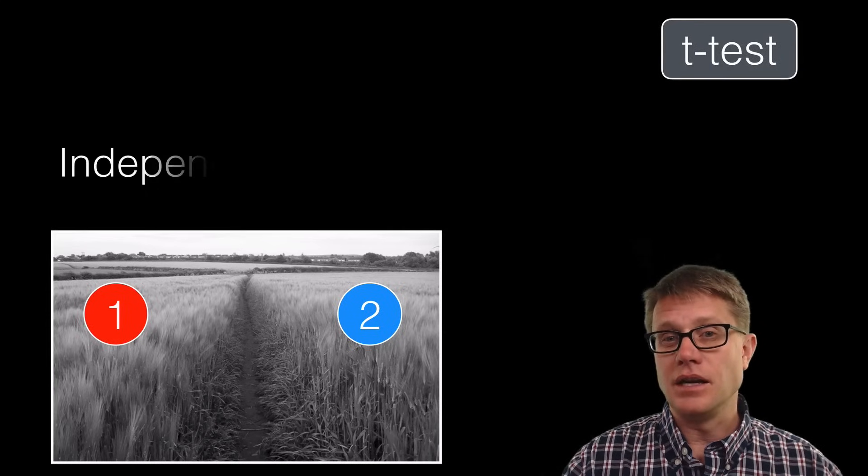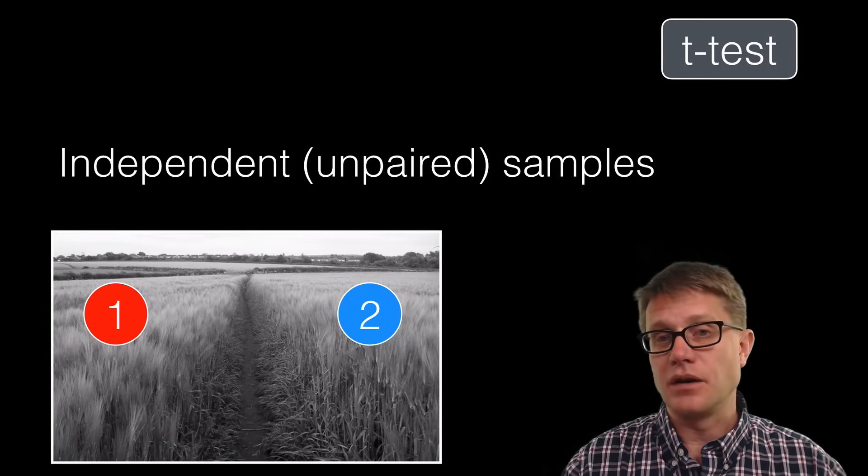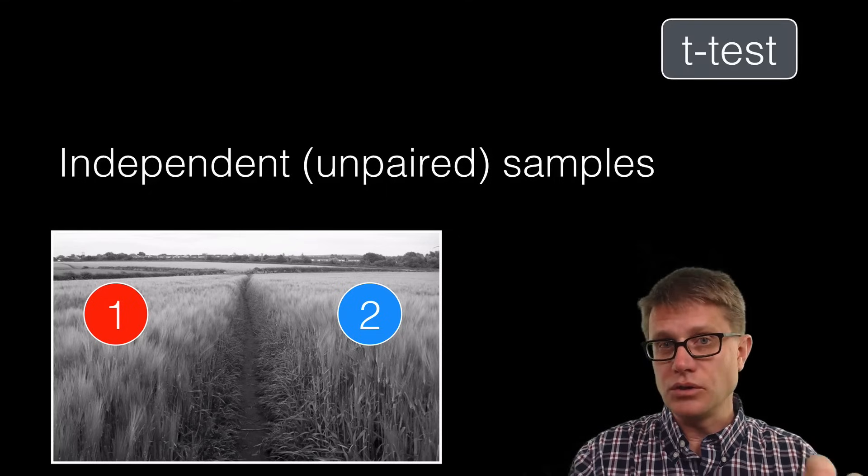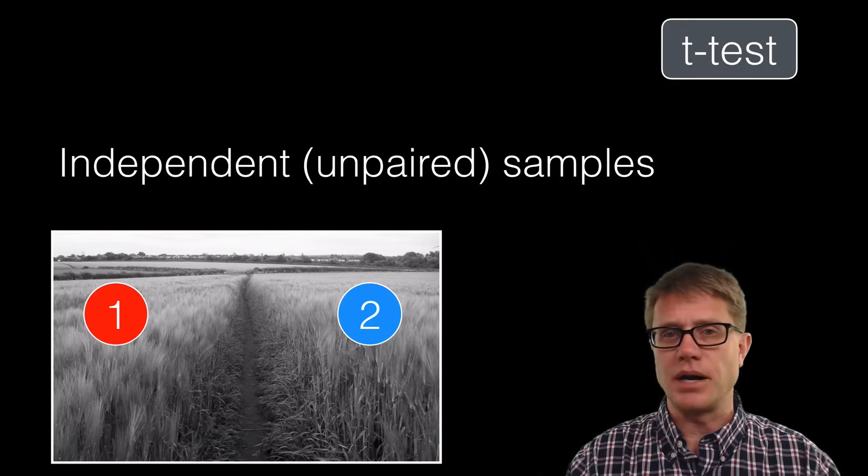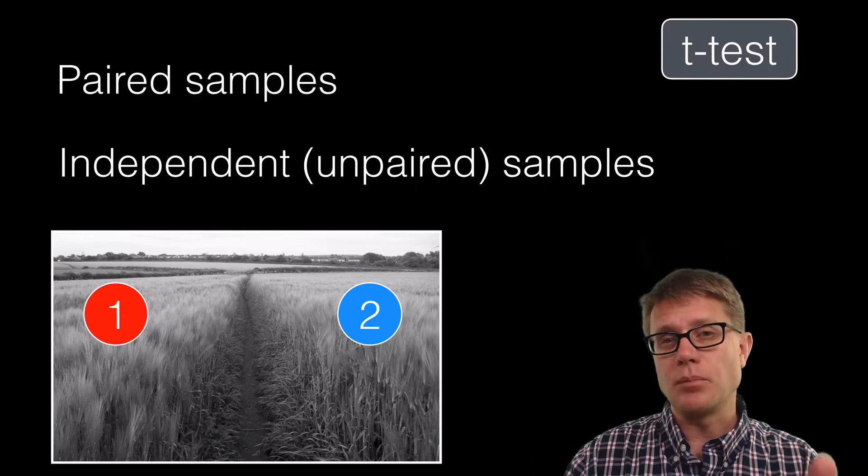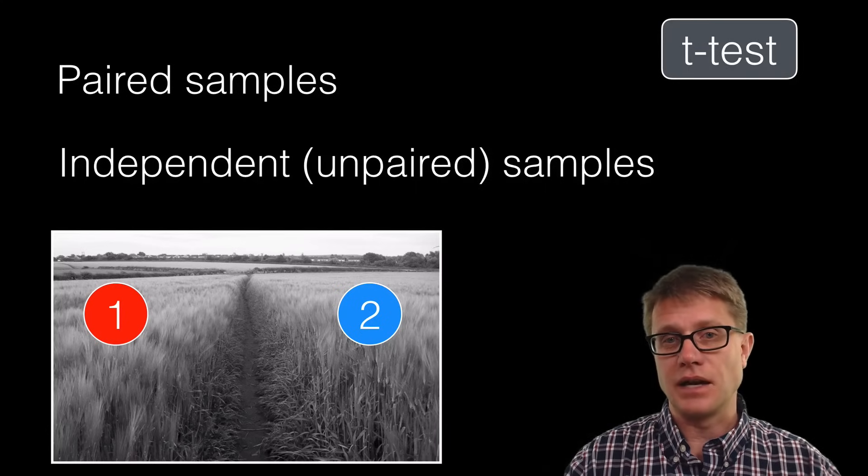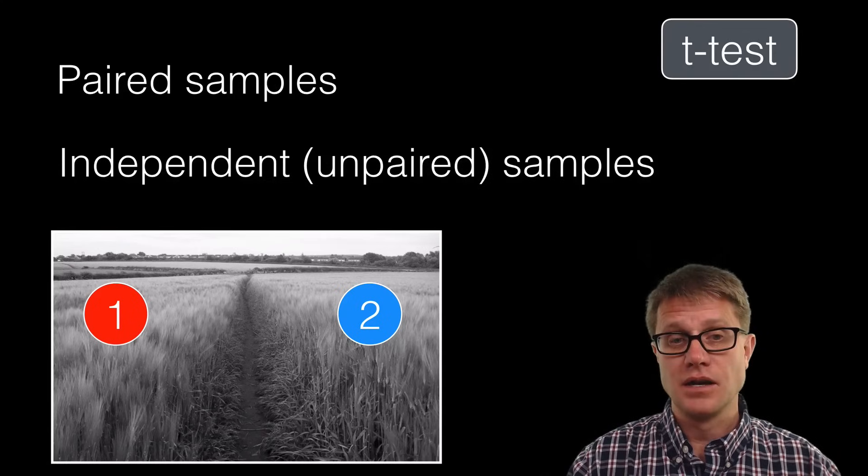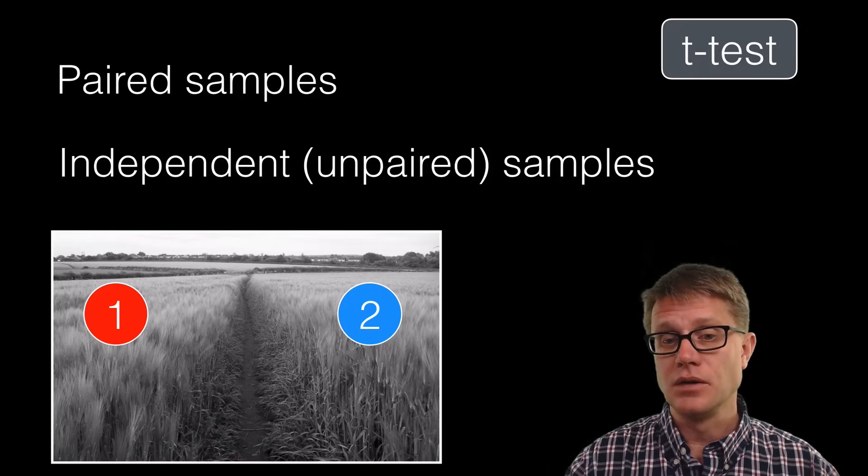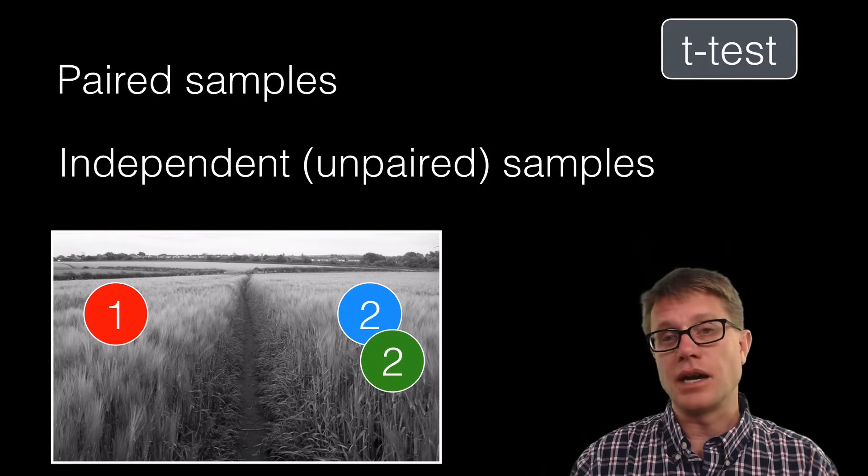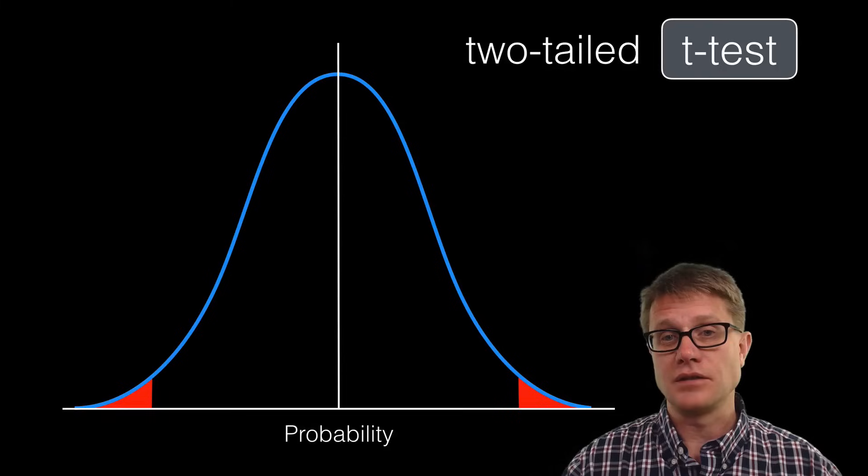We did an independent t-test or an unpaired sample. What does that mean? We had two different fields that we were comparing. You could be comparing two different populations. You can also run a paired t-test and you would have to select that when you're running the t-test. That's if we're sampling the same population twice. Maybe we're looking at field 2 but then we're applying a chemical and looking at it again. That would be a paired test.